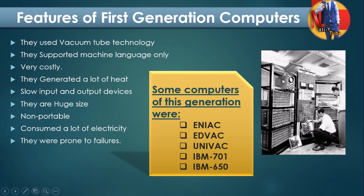So, before this generation, computers were huge. The programming language was machine language — ones and zeros — not a high-level programming language like English. Those are the features of the first generation computer.